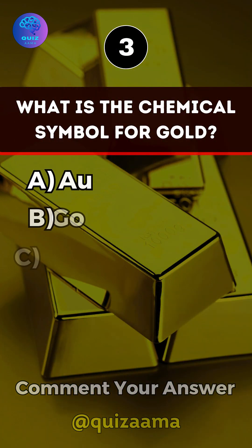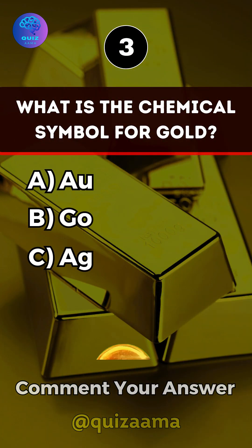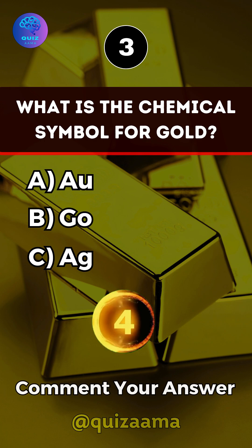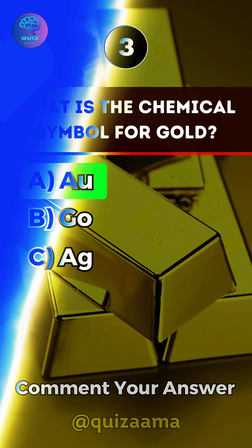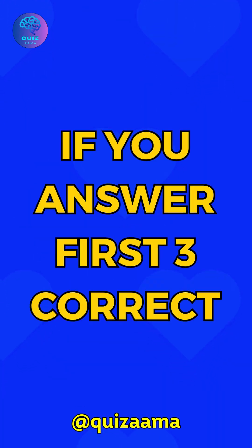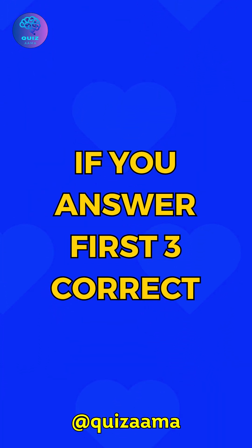What is the chemical symbol for gold? Answer A: Au. Like the video if you got the first 3 correct.